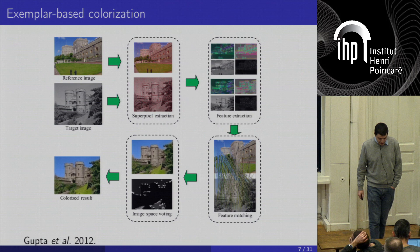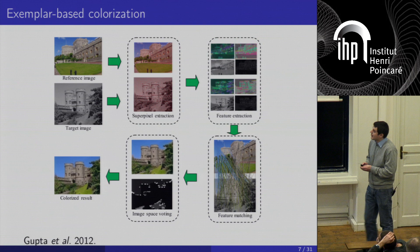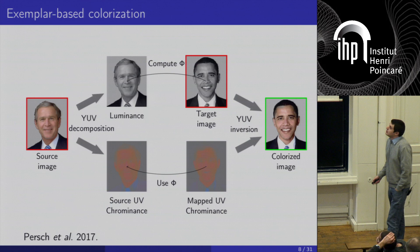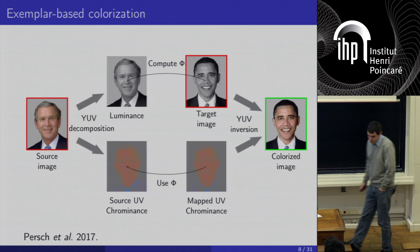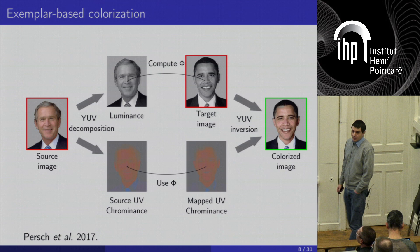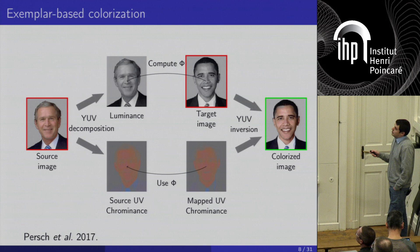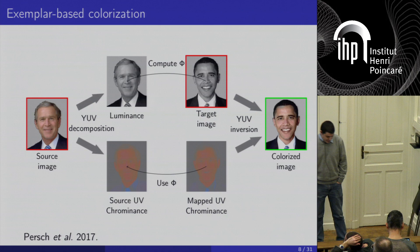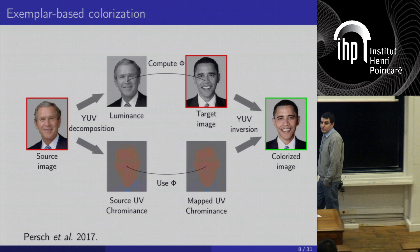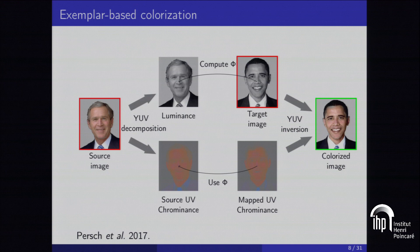Another method colorizes faces. A source image is transformed into a luminance value, and then a map between the source and target images is computed using a variational method with a regularization based on a linearized elastic potential. When the map is computed, all chrominance values of the source image are mapped, and combined with the luminance to recover the colorized image via UV inversion. This is fairly automatic, but not fully automatic because you need to find a good source image — for instance, you cannot colorize a face with glasses using a reference without glasses.